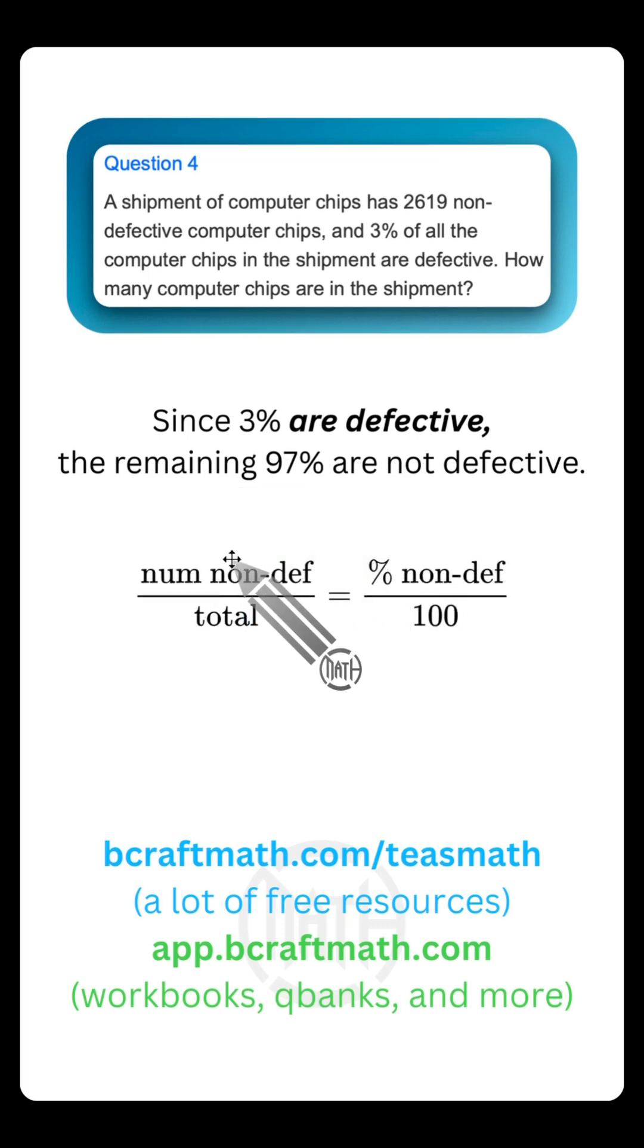So here's our proportion. Let's think part over whole equals percent over 100. And what you must make sure match up here are these two things. Since we have the number of non-defective over here, we want the percentage of non-defective over here. And remember, we're trying to find the total. Our word problem gave us the number of non-defective.